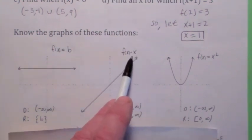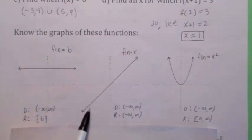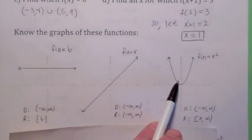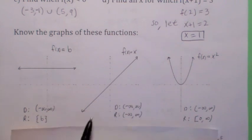f of x equals x. You should know what that graph looks like. It's like a 45 degree line. The domain and range are both all real numbers. f of x equals x squared. Domain negative infinity to infinity. Range closed on 0 to infinity.